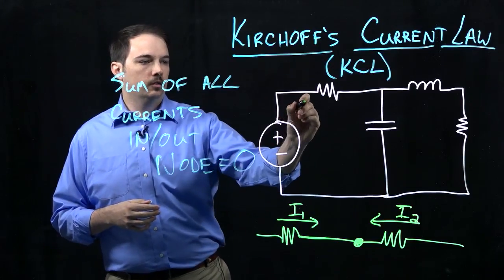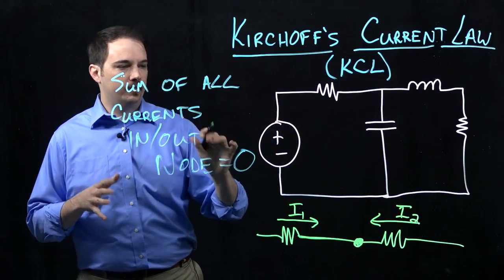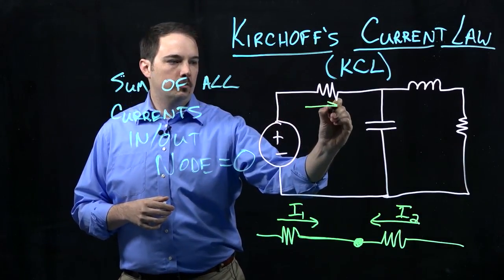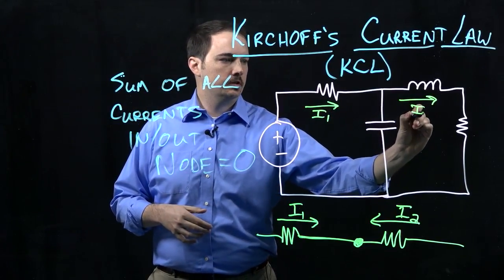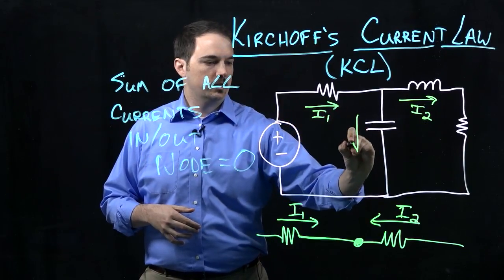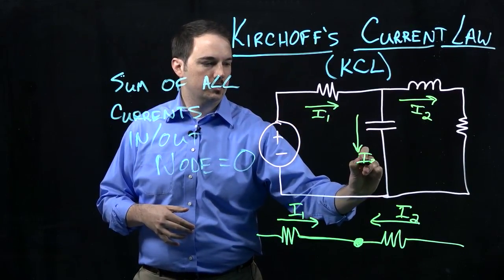But if we first go ahead and define the various current paths that are possible, let's say we put some current I1 here, another current path I2 here, and then a third one coming down the middle, I3 here.